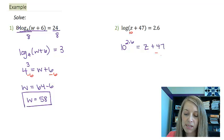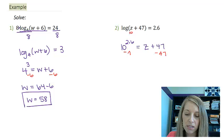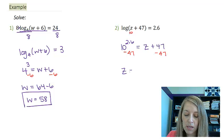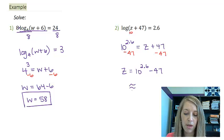To isolate my z, all I need to do is subtract 47. So z equals 10 to the 2.6 minus 47.